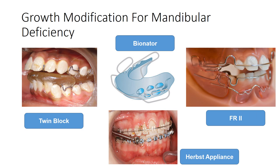These pictures show some of these appliances: a twin block, a bionator, a function regulator, and a fixed Herbst appliance. The twin block is widely used because it is the only myofunctional appliance that comes as two pieces rather than one single large block, and therefore patient compliance is much better compared with the other types.